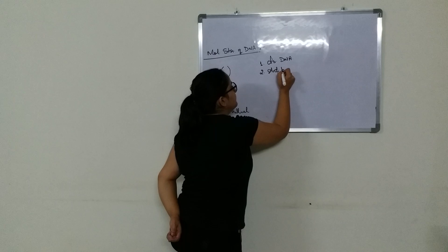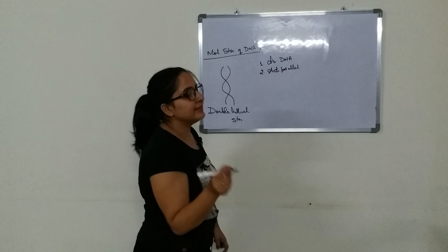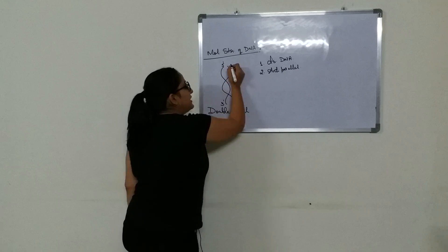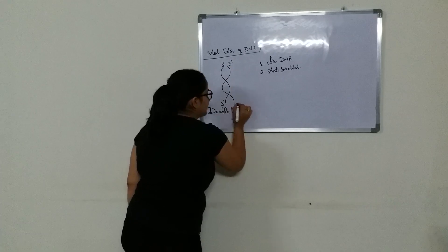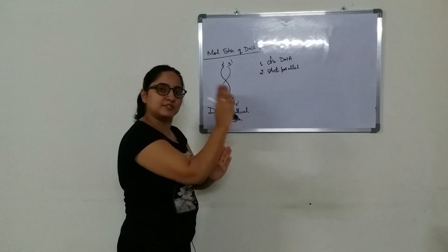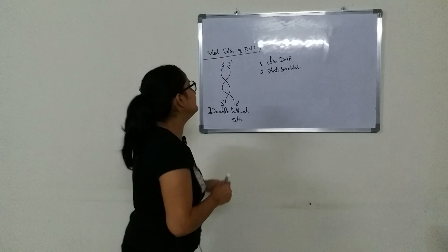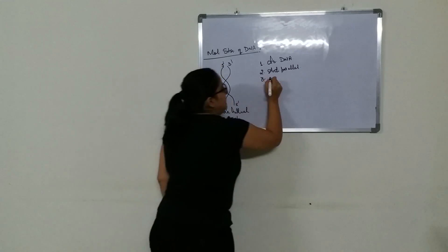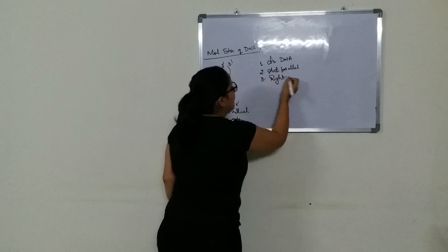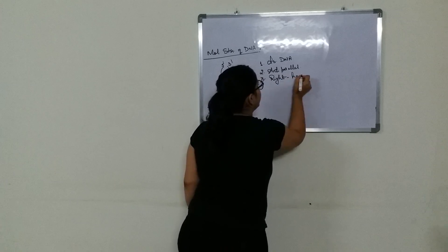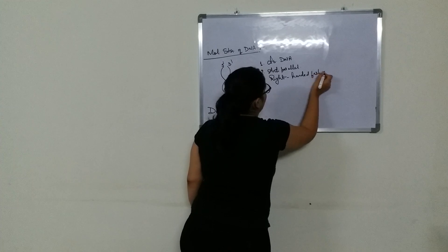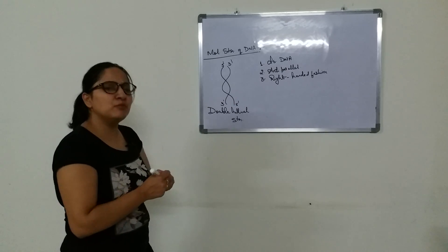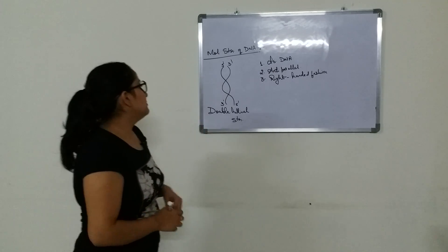There are a few points to remember about the structure of DNA. First, it has two strands coiled together, which is why it is known as double-stranded DNA. Second, it is anti-parallel — the two strands run in opposite directions. If one strand runs from 5' to 3', the other runs from 3' to 5'. Third, the DNA helix turns in a right-handed fashion, although it can turn in a left-handed fashion also.